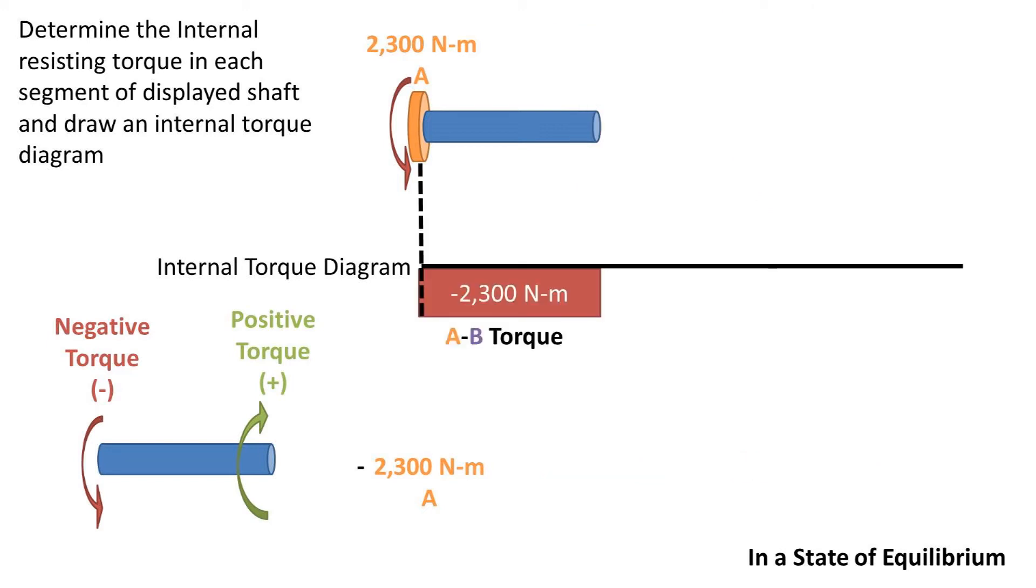I'll be working from left to right, so the first torque we encounter is a negative torque of 2300 newton meters at point A, which is the torque going through segment AB. We can plot the 2300 newton meters on the internal torque diagram between A and B.